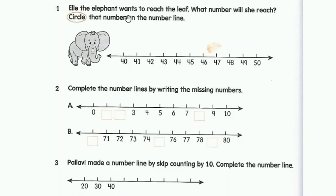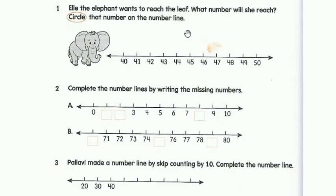Now open your workbook S1. Ellie the elephant wants to reach the leaf — what number will she reach? Circle that number on the number line. We start counting from the leftmost number 40 and count forward. We reach number 47, where we can see the leaf. So we circle the number 47.